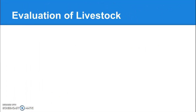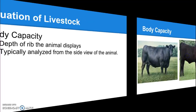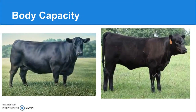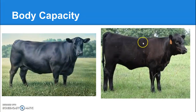Body capacity, also known as depth of rib, is typically evaluated from the side view of the animal. Looking at a mature cow on the left and an immature steer on the right, depth of rib refers to how deep the rib goes — measured from the top of the animal down to their belly. The mature cow clearly has more depth of rib than the steer; there's just more capacity and volume there.